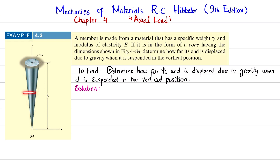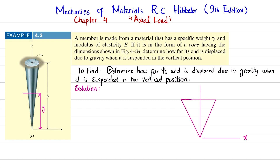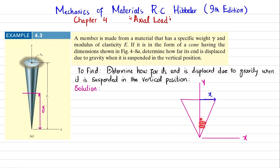We will cut this cone at any distance y from the base, and find a relationship between its radius and length. At this cut, the radius is taken as x, and x varies at different values of y — at each position along y, the radius x is different.